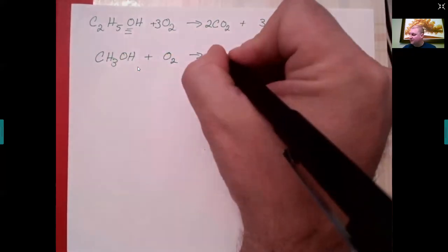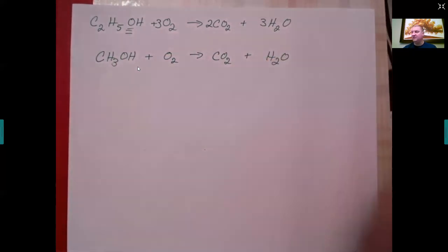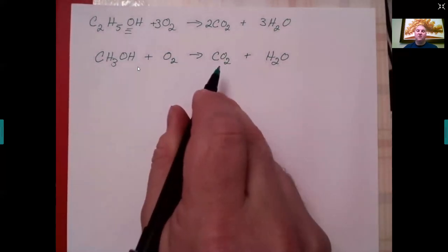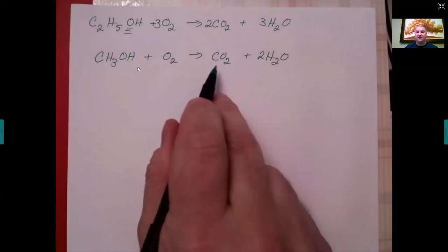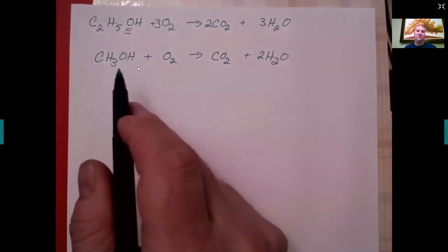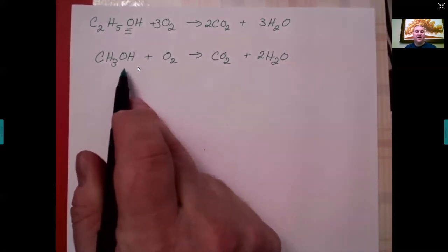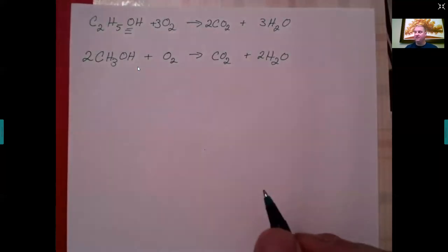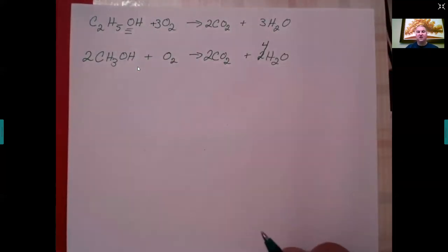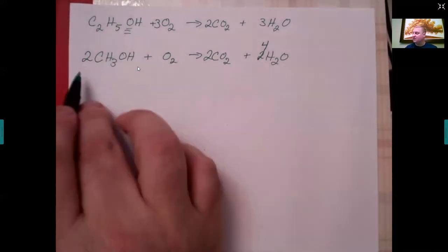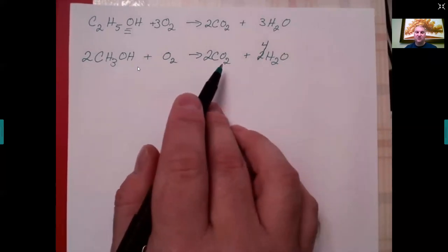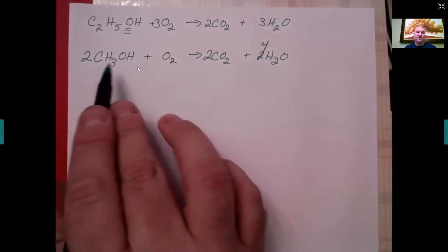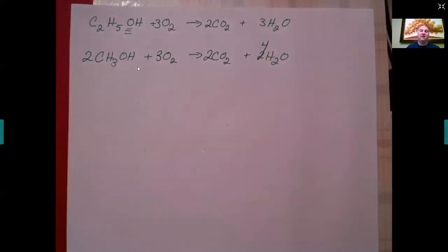Now we balance methanol undergoing combustion. One carbon means one CO₂; four hydrogens means two waters. We get two plus two — four oxygens on the product side — but the extra oxygen in methanol makes the count odd. We must double the methanol, then double all other coefficients: two CO₂, four waters. Now we have two oxygens from methanol, so we only need six more from O₂ gas.